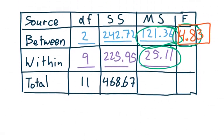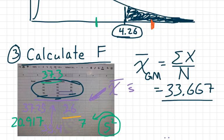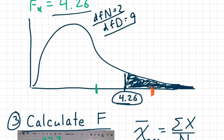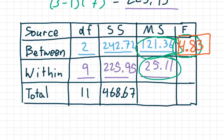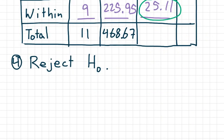Let's sneak back to the previous page and take a look at what we had. Here is our rejection region starting at 4.26. Here is our test value, 4.83. That is within the rejection region. So we'll make the decision next: we'll reject the null hypothesis.